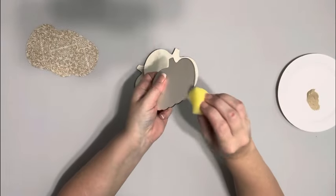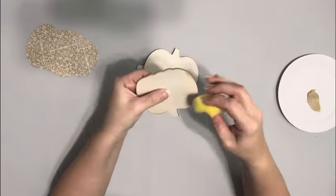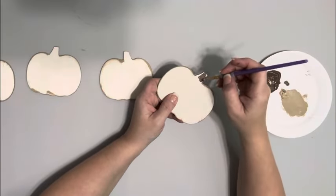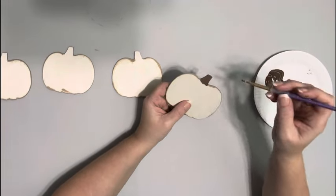I then paint the edges of each of the pumpkins with Buttered Pecan Acrylic Paint by Folk Art, and I take that same color mixed with Truffle Chalk Paint by Waverly and brush that on each of the stems.